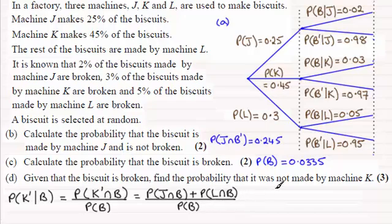We worked out these probabilities earlier in part C. For J and B, it was 0.25 times 0.02, so we just put that in: 0.25 times 0.02.